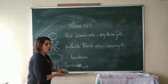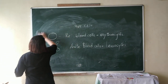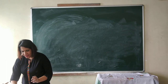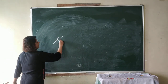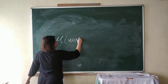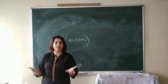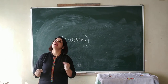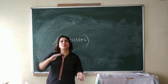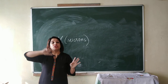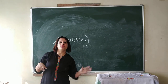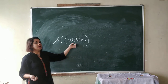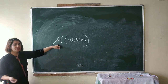Now we come to the size of a cell. The size of a cell is measured in microns. Just like you measure a line in centimeters or distance between places in kilometers, the size of a cell is measured in microns, and this is the symbol for microns. The smallest cell is that of bacteria.